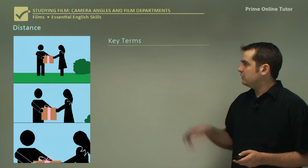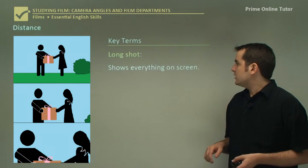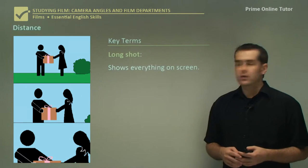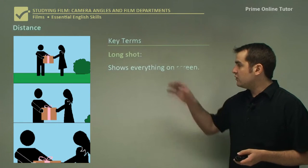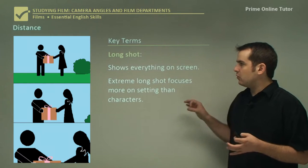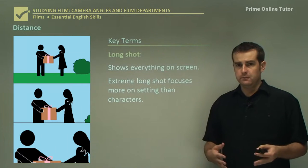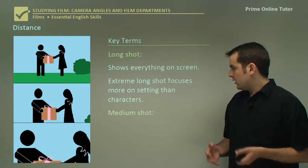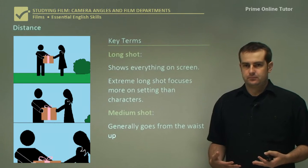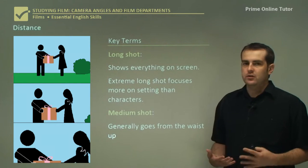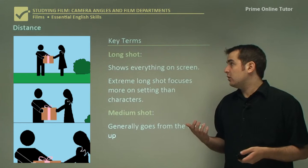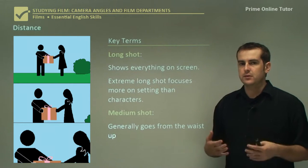Starting with your long shot — it basically shows everything on the screen. So the image of the boy and girl getting the present is basically your long shot; it shows everything around them. An extreme long shot goes even further back and focuses more on the setting, so it would focus more on the park around them. A medium shot, like we've got now, goes from the waist up. It's mainly used to highlight people interacting with each other more closely than a long shot, where you can get distracted by scenery.